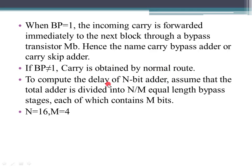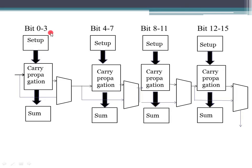Now let's look at the delay with an N-bit Carry Bypass Adder. We divide the N bits into different stages of equal length m. For example, with a 16-bit adder and m equals 4, we divide into 16 divided by 4, giving 4 stages of 4 bits each.